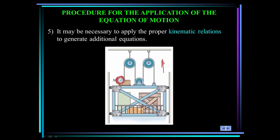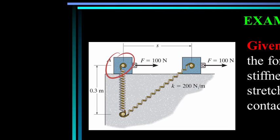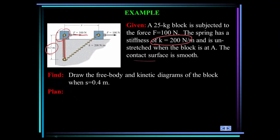So let's do an example. We have a 25 kilogram block. It is subjected to a force of 100 newtons. The spring has a stiffness of 200 newtons per meter. And it's unstretched in this position here. So the unstretched length is 0.3 meters. The contact surface is smooth. And whenever you see that, that just means that the frictional force is zero. So you do not consider mu n.